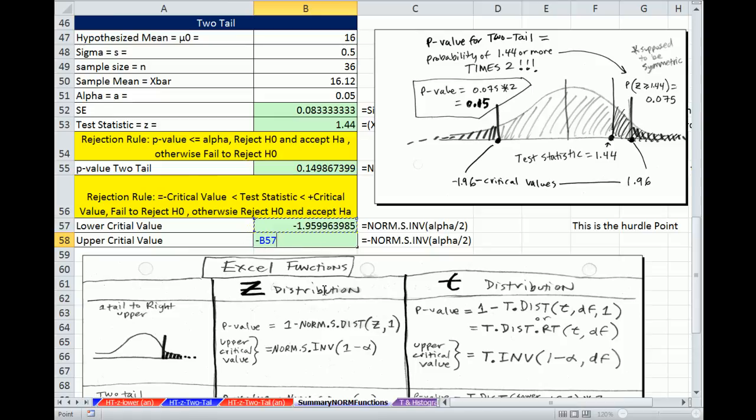And notice I didn't type an equal sign, control enter. You type that minus, it'll automatically put the equal sign in. And then you can clearly see our test statistic 1.44 is between these two, so we fail to reject the null hypothesis.